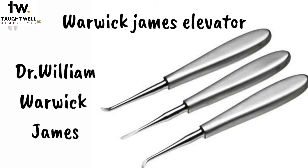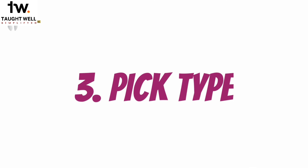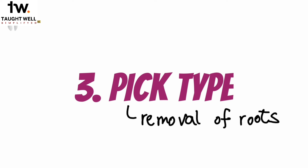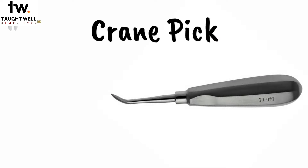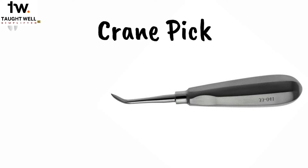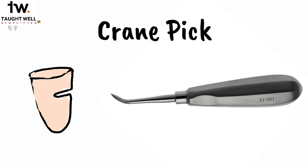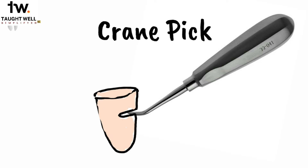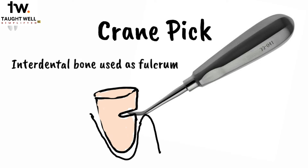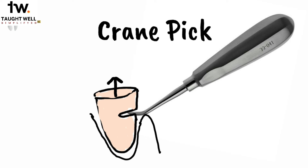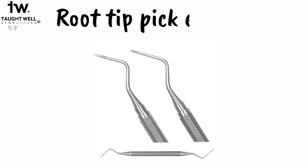Now let's move on to the third type of elevator: the pick type. It's used for the removal of roots. This is the Crane pick elevator — the heavy version of the pick type. Usually we drill a three-millimeter hole in the root to create a purchase point, then the tip of the elevator is placed into this point. The buccal plate of bone acts as a fulcrum, and the root is elevated from the socket. So this elevator works on the lever principle.